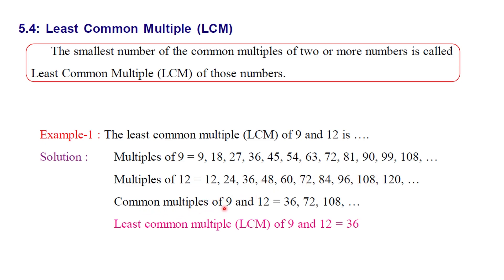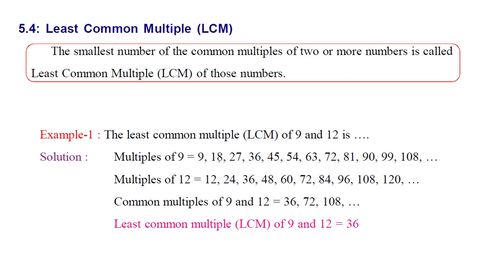Now we identify the common multiples. The common multiples are 36, 72, 108, and so on. The smallest of these is 36. So the least common multiple is 36. LCM of 9 and 12 is 36.